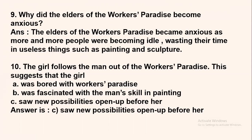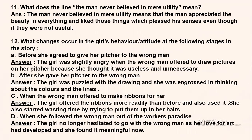Question 10: The girl follows the man out of the workers' paradise — what does this suggest about the girl? When the wrong man is thrown out of the paradise, the girl follows him. The options are: she was bored with the workers' paradise, she was fascinated by the man's skill in painting, or she saw new possibilities open up before her. The answer is C — she saw new possibilities open up before her, as meaningless things had now become meaningful.